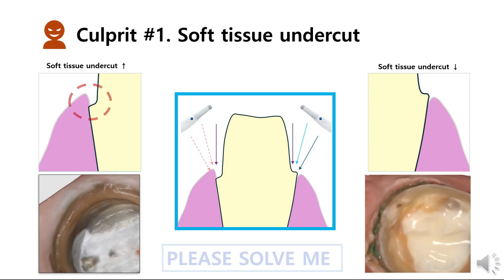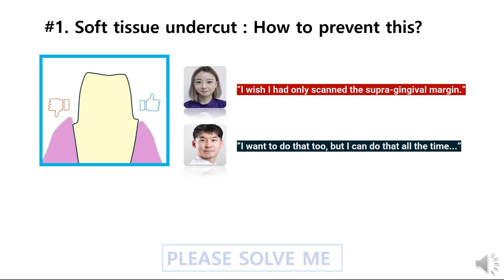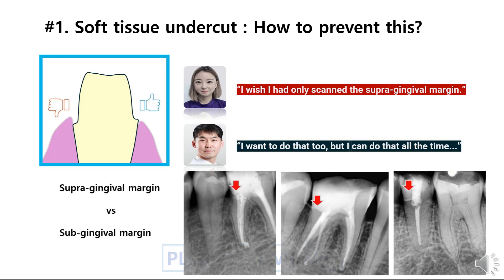If the dental technician uses this blurry data to make the final prosthesis, the margin gets set incorrectly and a crown with an ill-fitted margin will be produced. The best way to prevent this first culprit is to create a crown with a supragingival margin, because this will completely remove the possibility of the soft tissue undercut. In the case of the supragingival margin, the scanning light is not obstructed, so scan data with clear margins can be more easily obtained most of the time.